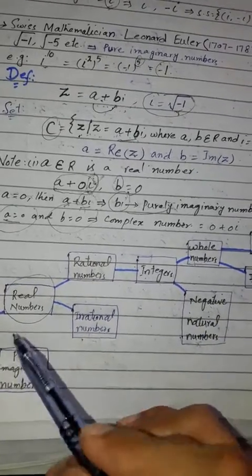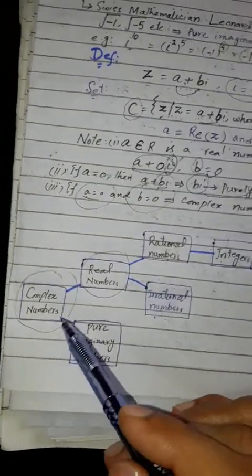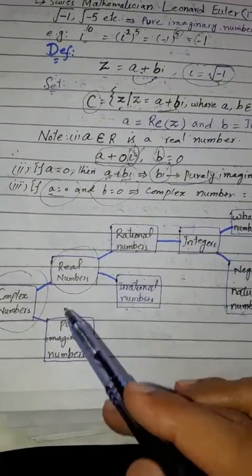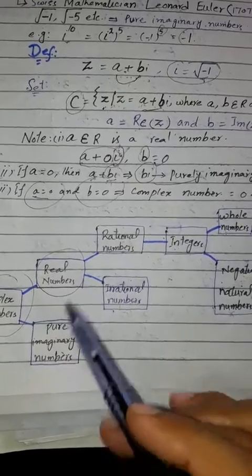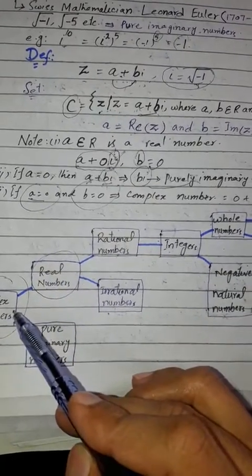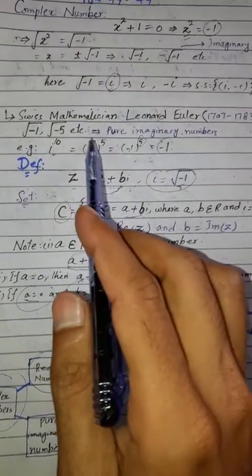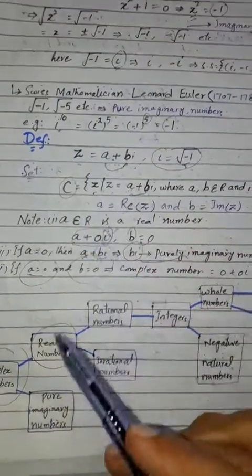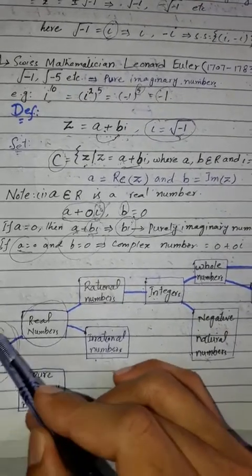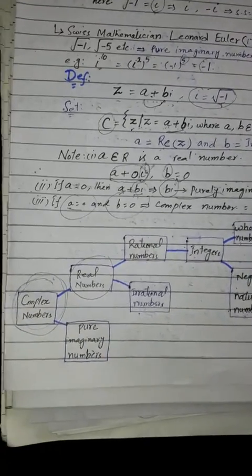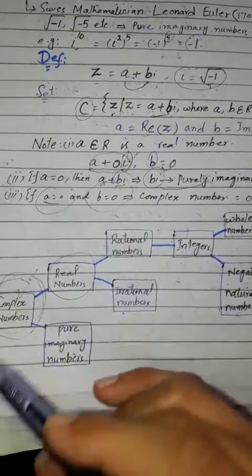So the complex number set is the union of real numbers and pure imaginary numbers. Real numbers together with pure imaginary numbers form the complex number set. All previous number sets are contained within the complex number set.